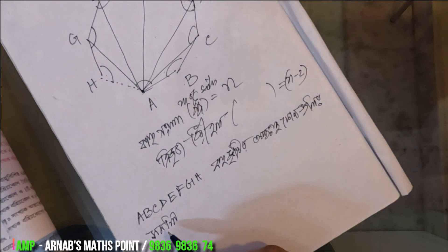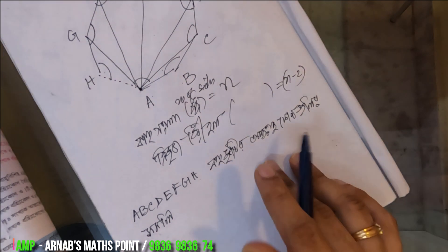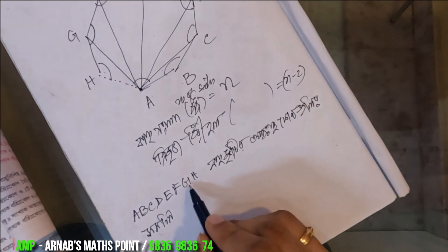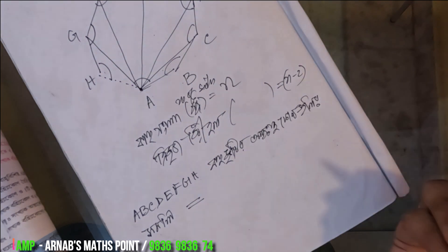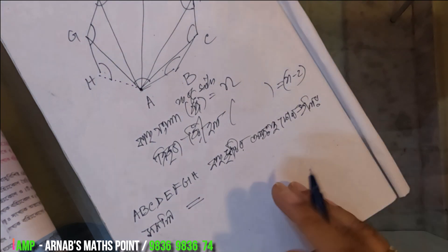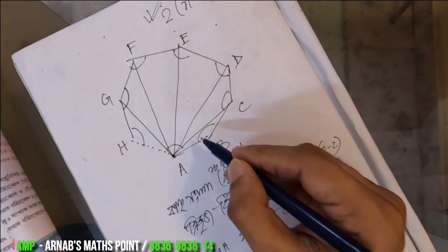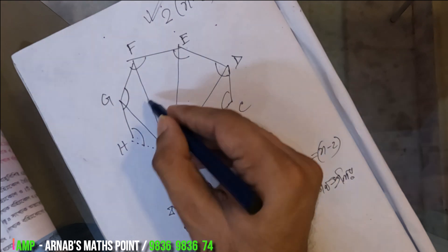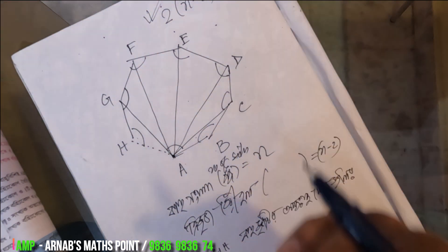The sum of all the interior angles of polygon ABCDEFGH is equal to the sum of all the interior angles of n minus 2 number of triangles.